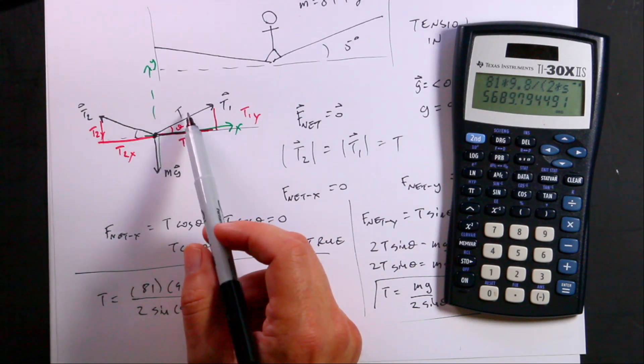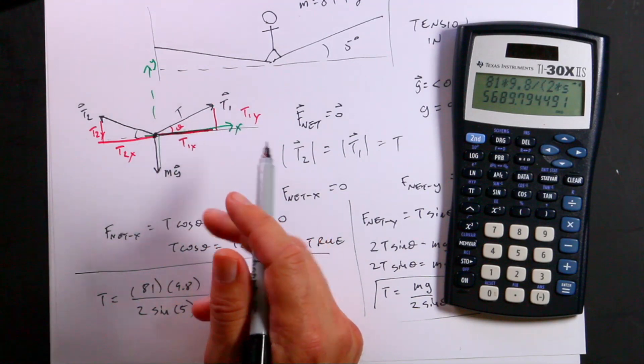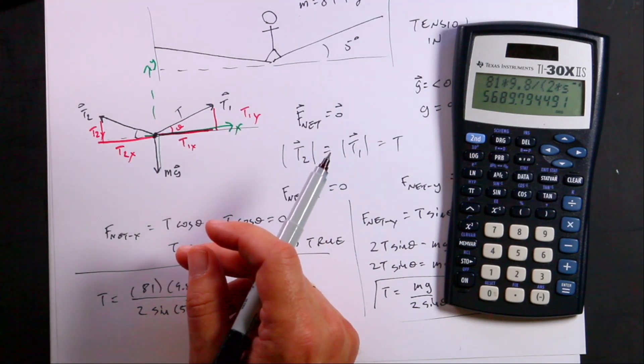If it gets really, really small, the magnitude of the tension goes ginormous. That's a physics term. Ginormous.